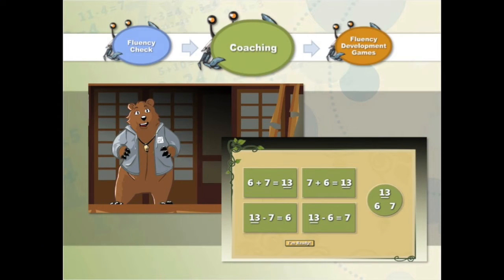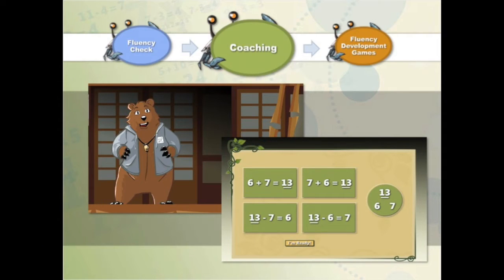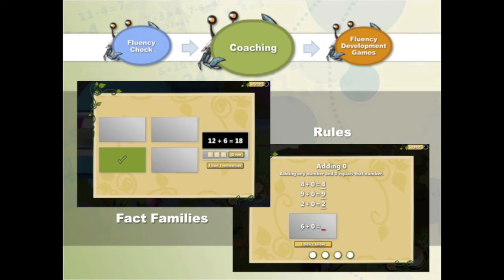From there, the students will meet Coach Penny, who will coach them on a fact family or rule that the students are not yet fluent in. The coaching session finishes with Coach Penny's picture puzzle, where students will reveal a picture by answering the facts that are shown.